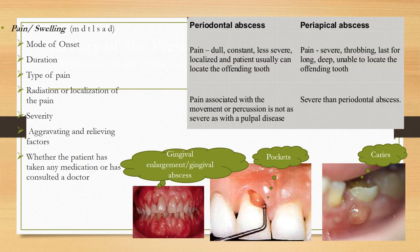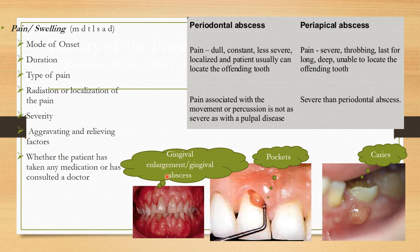For the history of presenting illness, the most important complaints are pain and swelling. Under pain and swelling, note the mode of onset, duration, type of pain, radiation or localization, severity, aggravating and relieving factors, and any medication taken or doctors consulted. If there is pain or swelling, rule out whether it is a gingival abscess, periodontal abscess, or periapical abscess.